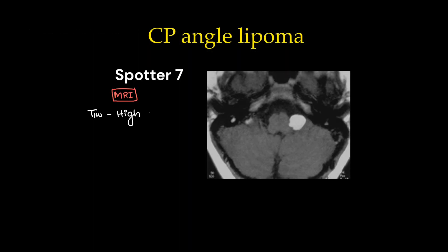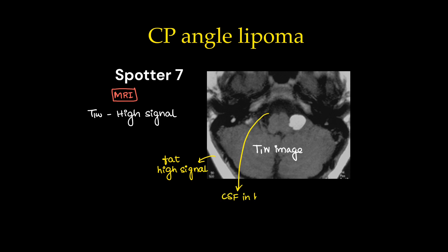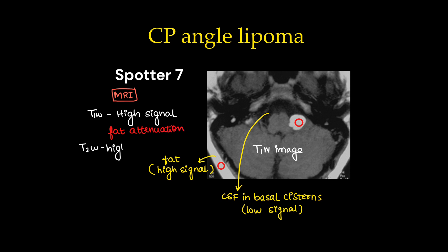Spotter 7 is a case of CP angle lipoma. On MRI T1, the lesion shows high signal similar to subcutaneous fat, while CSF in the basal cisterns shows low signal. On T2 it will also show high signal. On fat saturation sequences the lesion shows signal suppression, confirming it is a fat attenuation lesion.